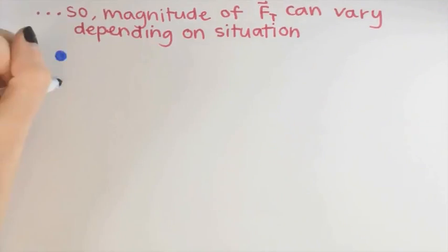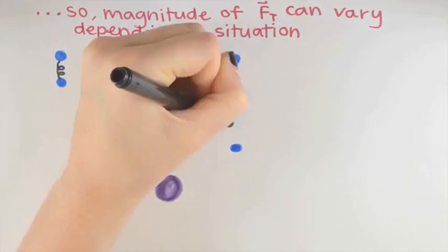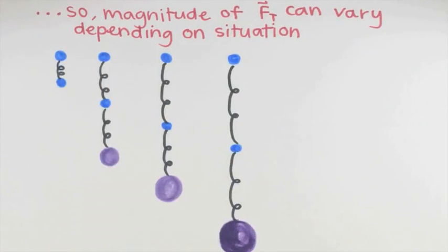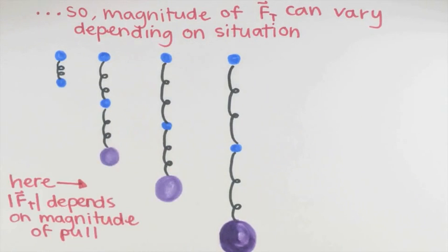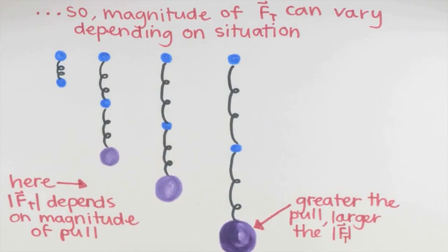We can now see how the magnitude of the tension force can vary depending upon the particular situation we're studying. Here, for this example, where we are pulling on the wire, then the tension force magnitude will depend upon the magnitude of our pull. The greater the pull, the more the spring-like bonds will stretch and, therefore, the larger the magnitude of the tension force.